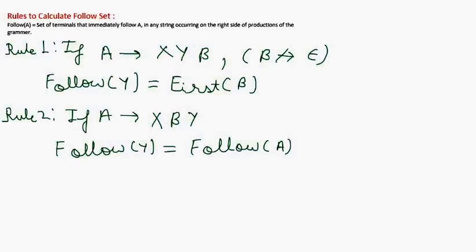In the previous example we saw some rules on how to calculate the Follow Set. The Follow Set of any non-terminal A is equal to the set of terminals that immediately follow A in any string on the right hand side of a production of the grammar. So if we have to evaluate the Follow of any non-terminal A, we look at what immediately follows that non-terminal on the right hand side. These were the rules: rule 1, rule 2, and rule 3. In this tutorial we will cover an example of how to calculate the Follow Set.